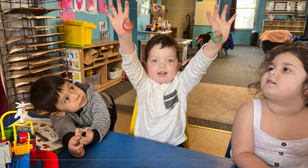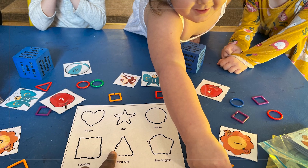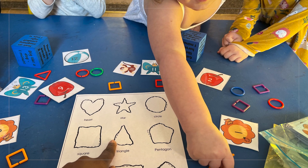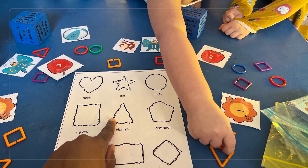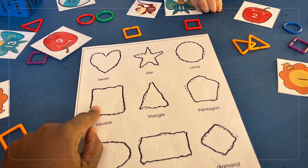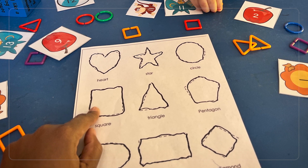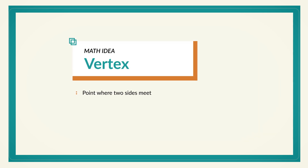What's really important in this game is that you're helping children pay attention to the attributes or characteristics of shapes — things like how many sides and vertices a shape has. A vertex is the mathematical term for where two sides meet, what you might normally call a corner of the shape.